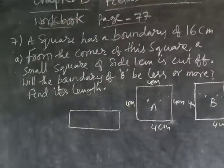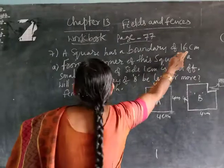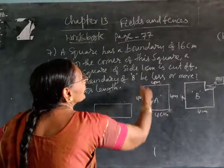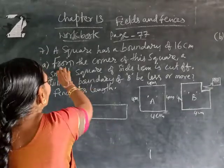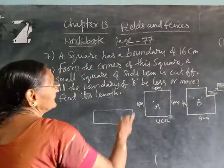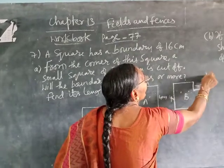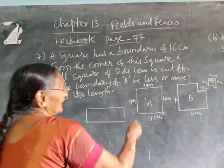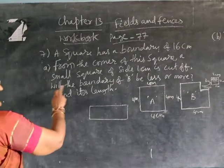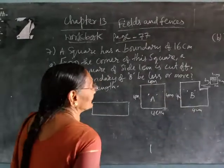Now we will see page number 77, question number 7. A square has a boundary of 16 centimeters. The boundary is 4 plus 4 plus 4 plus 4, which is 16 centimeters. That is the perimeter. From the corner of this square, a small 1 centimeter square is cut off. Then, what is the perimeter of the new shape? Is it less than, equal to, or more than the original?